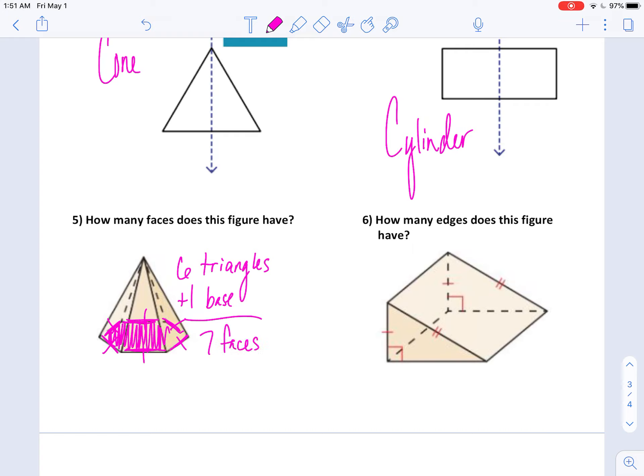And number 6. How many edges does this have? I'm looking for these straight lines. So 1, 2, 3. Dotted lines count as well. 4, 5, 6, 7, 8, and 9. So 9 edges.